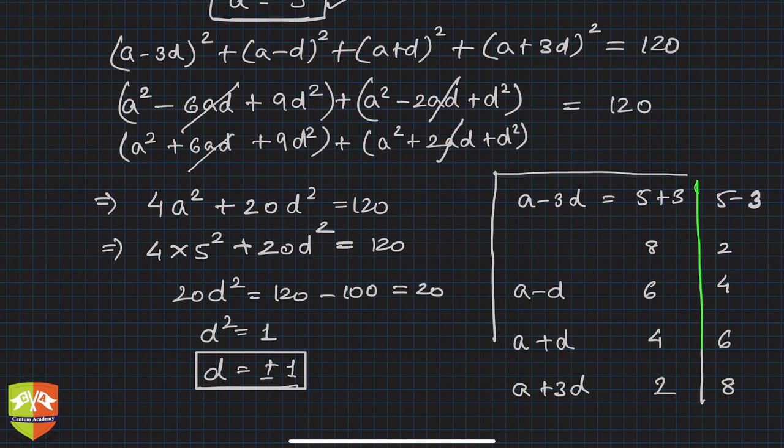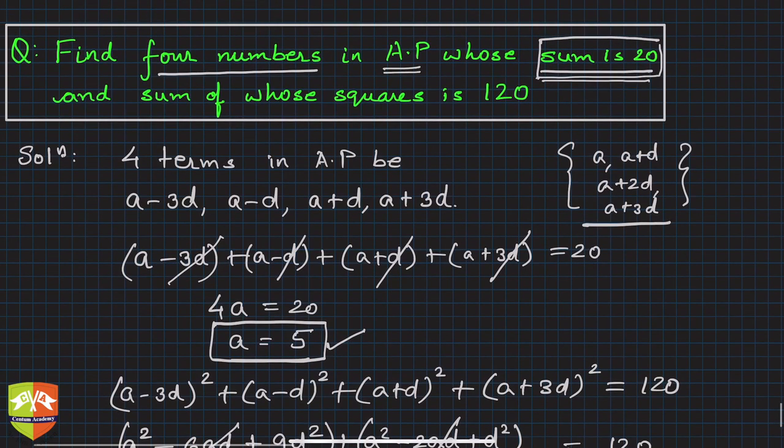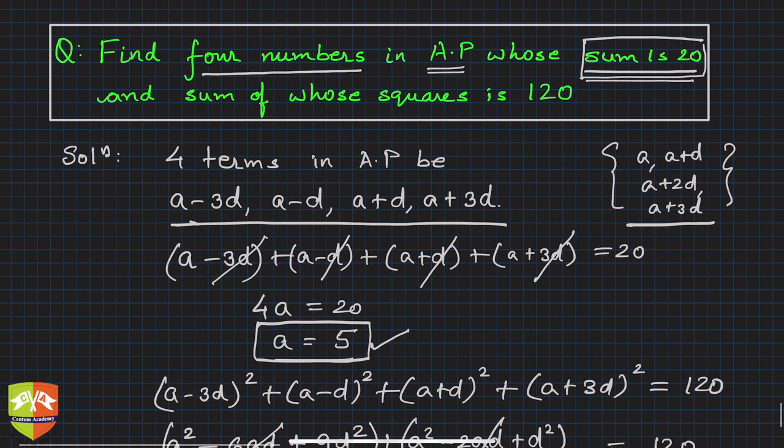Hence you learned in this problem that if you take the four terms as a minus 3d, a minus d, a plus d, and a plus 3d, then it helps in eliminating one of the variables and hence the problem solving becomes little easier.